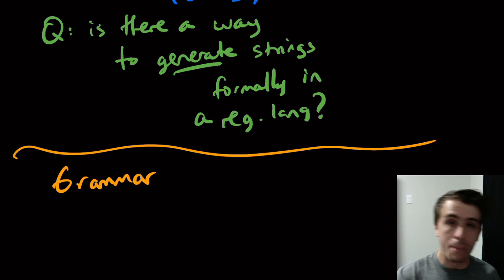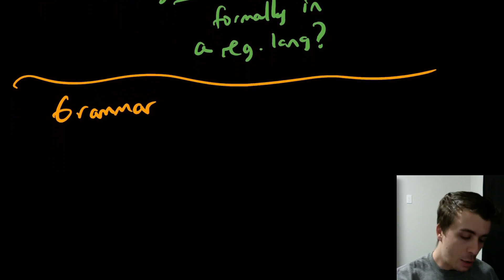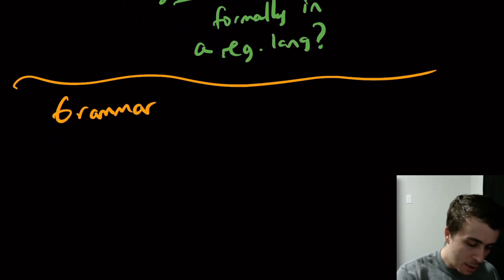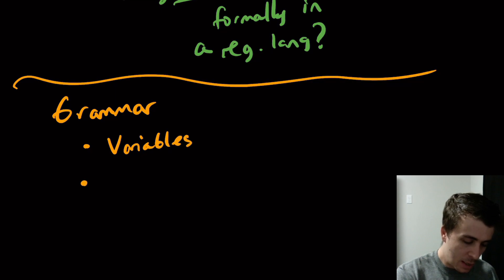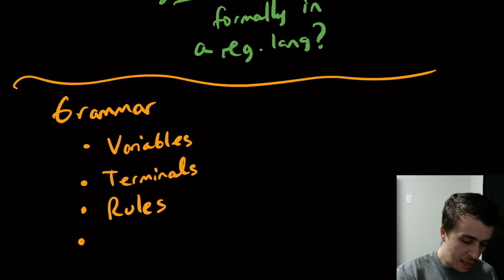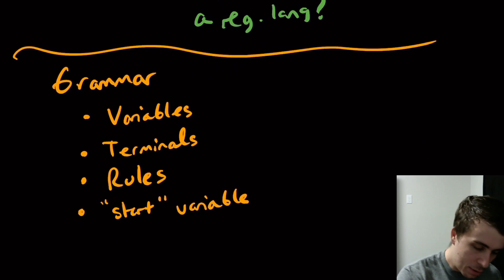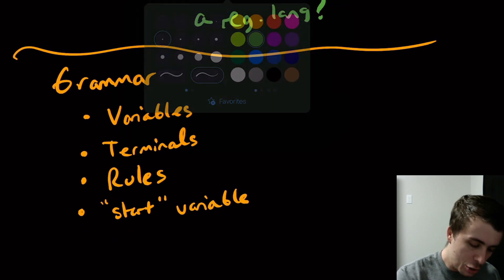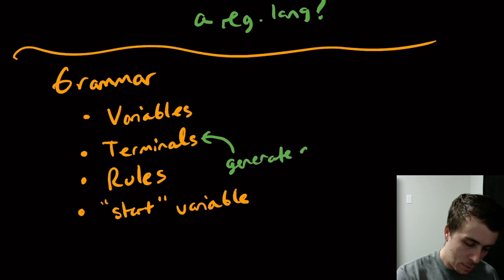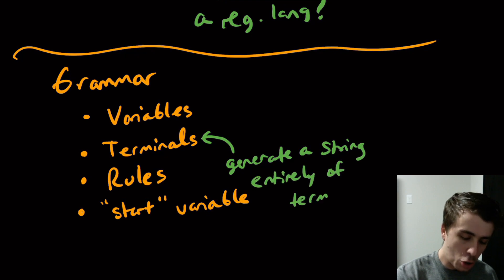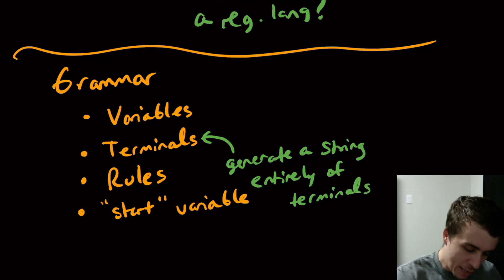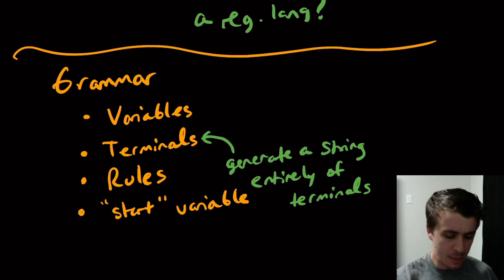That concept is something called a grammar. A grammar is a mechanism that allows us to actually generate the strings. A grammar has basically four things: it has something called variables, something called terminals, a set of rules, and a start variable. What we desire to do is to generate a string entirely of terminals — only terminals, nothing else.